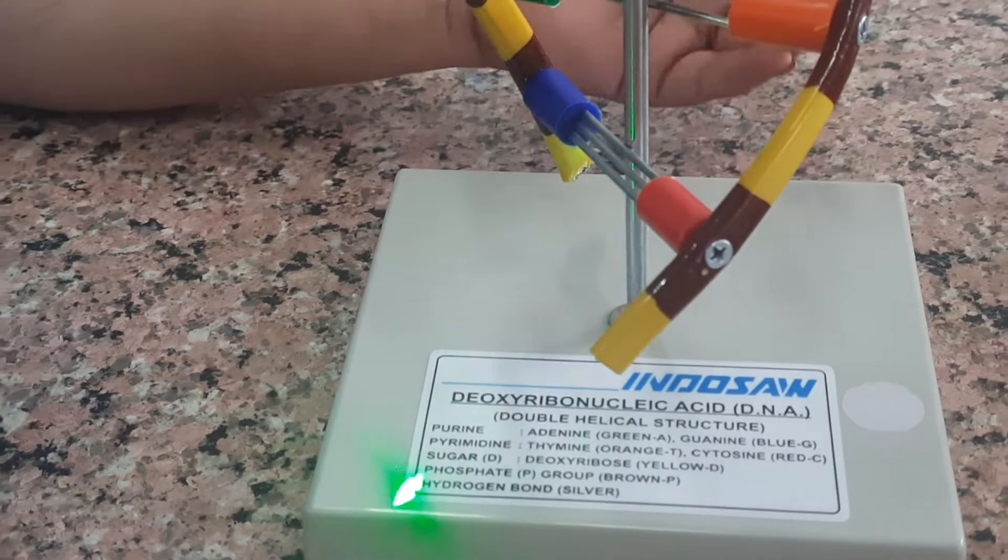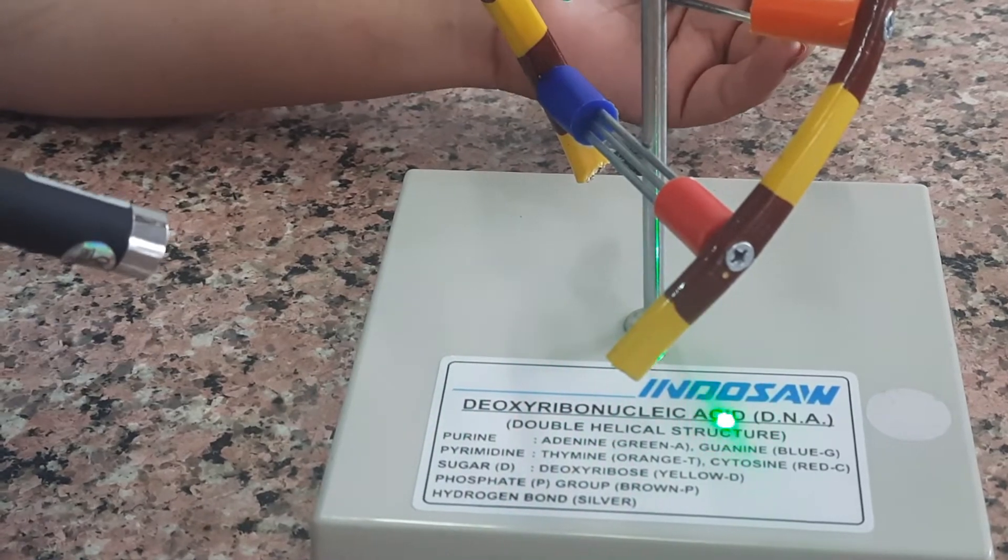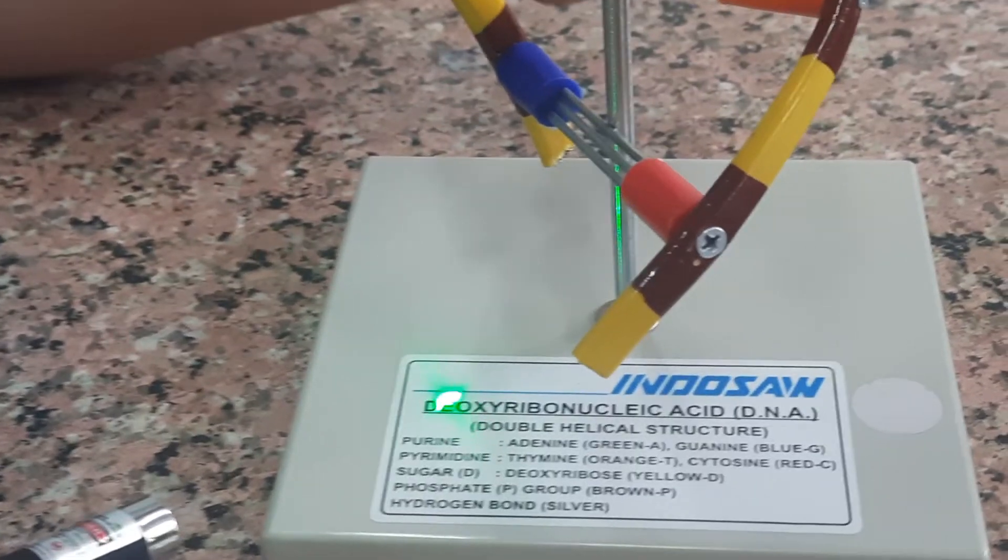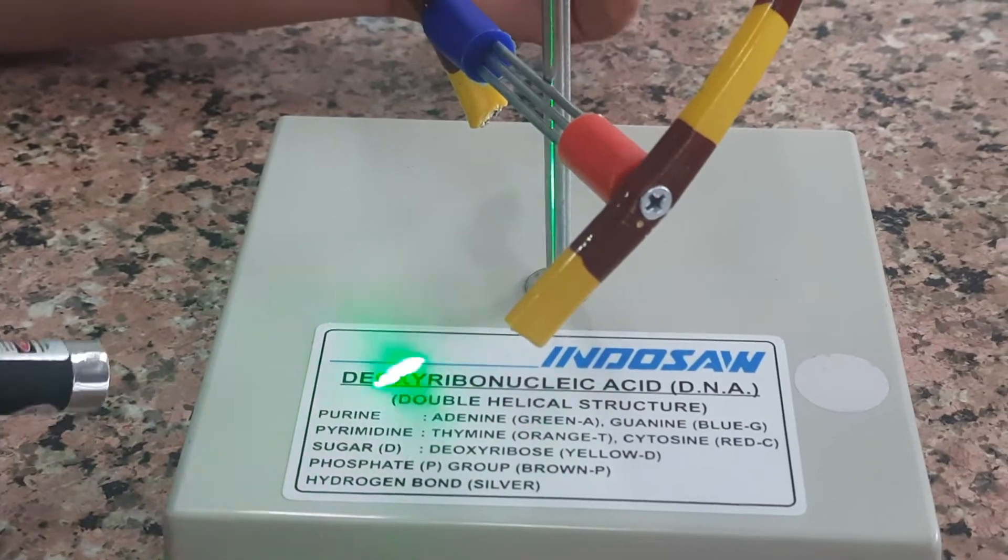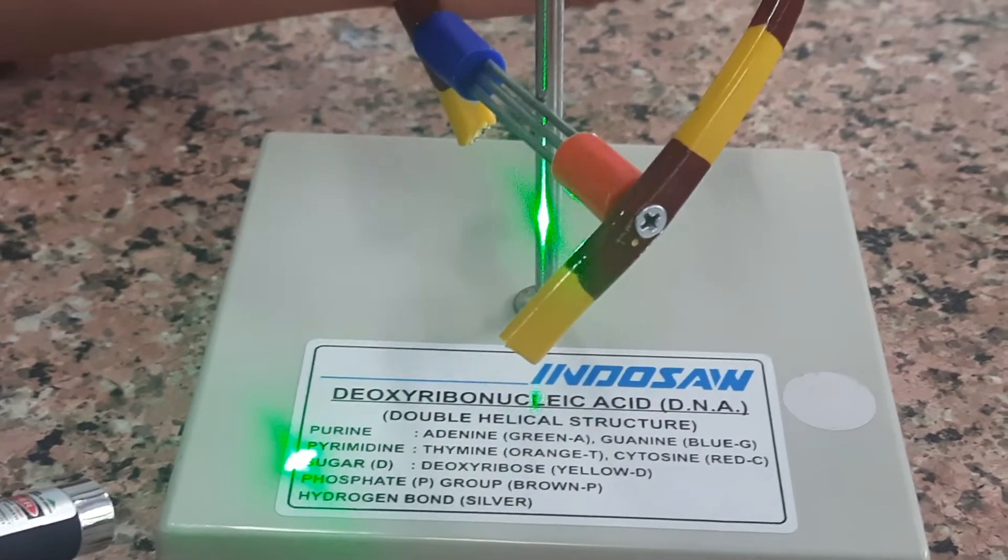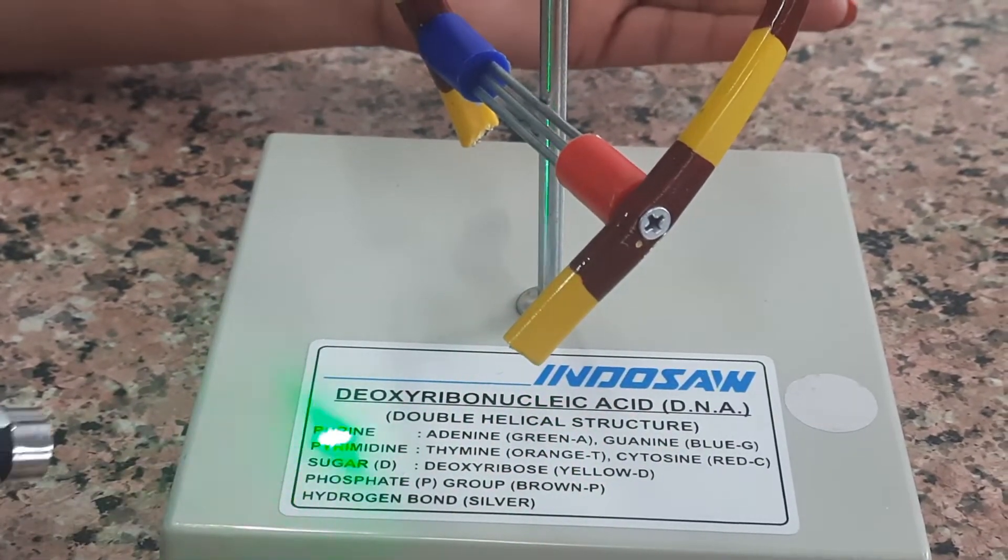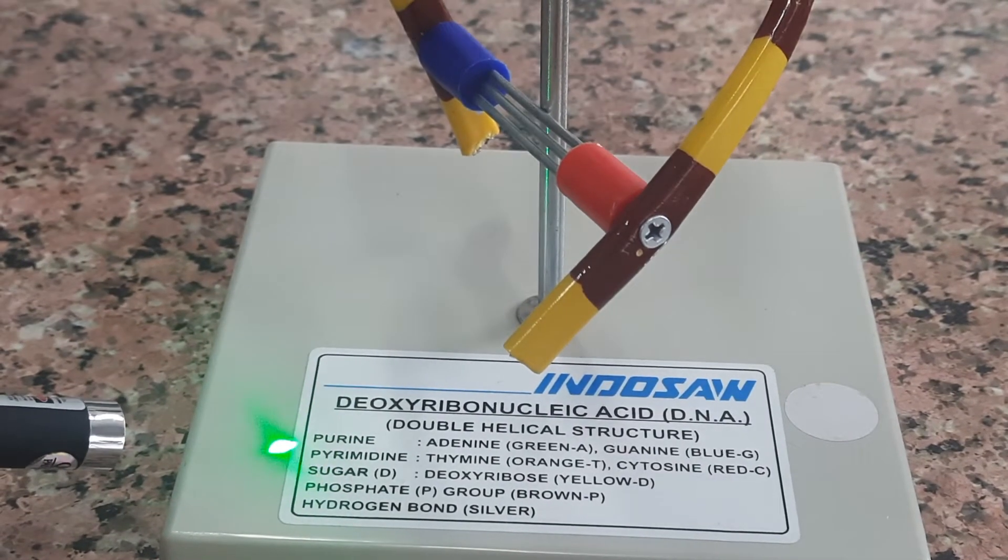The model mentions the full form of DNA because most students don't know it. They have also mentioned that it is a double helical structure and have given the names of the purines present in the model.